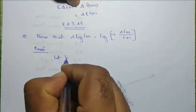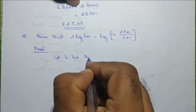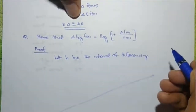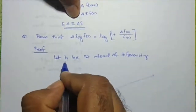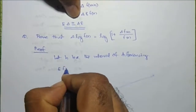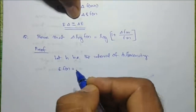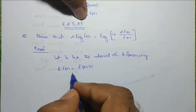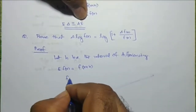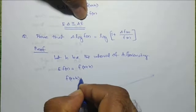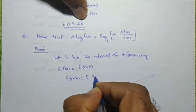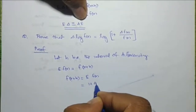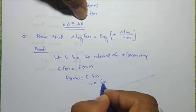Let h be the interval of differencing. We have E f of x equals f of x plus h, or f of x plus h equals E f of x, which can be written as 1 plus delta into f of x.